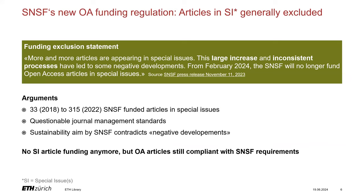Based on its own analysis, the SNSF concludes that the large increase and inconsistent processes have led to some negative developments. From February 2024, the SNSF will no longer fund open access articles in special issues. In 2018, 33 SNSF-funded articles were published in special issues; by 2022 this number increased to 315. The SNSF notes that some journals now publish significantly more special issues than regular issues, and bibliographic analysis shows that the increase in the number of special issues goes hand in hand with short processing times and lower rejection rates. Publishing a large number of articles as quickly as possible does not add much value.